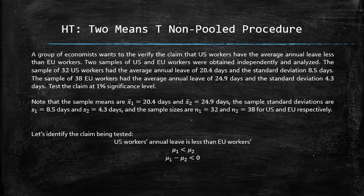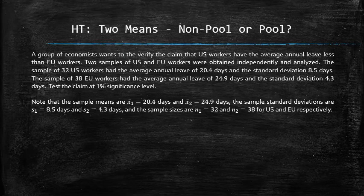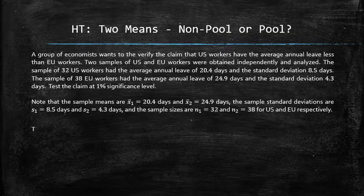Since the claim is about the population means and the population standard deviations are unknown, we will use the two-means t procedure. But how do we choose whether it is pooled or non-pooled? We use the t-pooled procedure when the standard deviations can be assumed equal; otherwise, we use the t-non-pooled procedure. To test whether the standard deviations are the same, we set up a two-variances F-test.